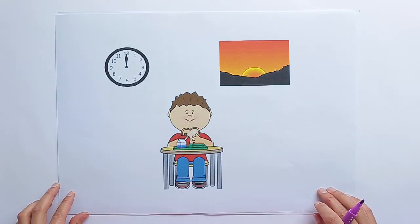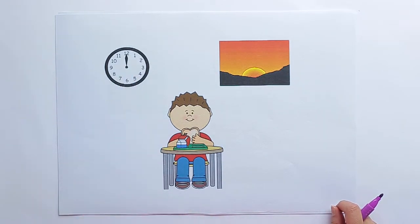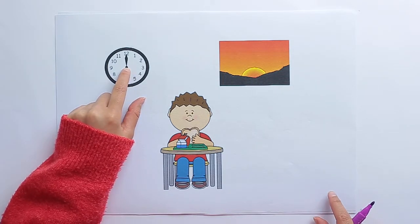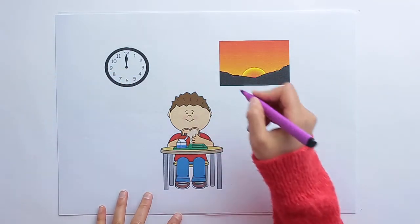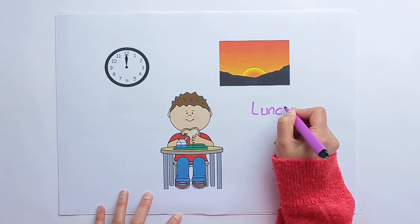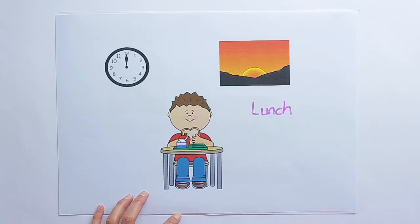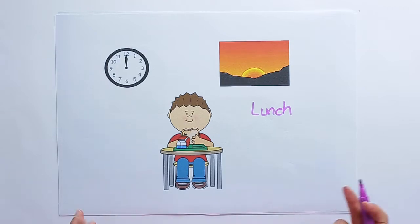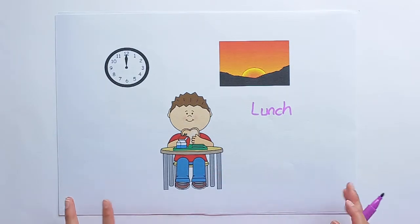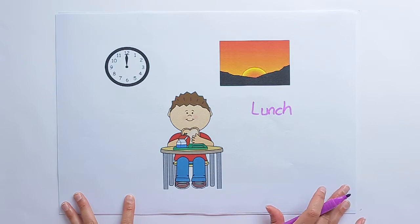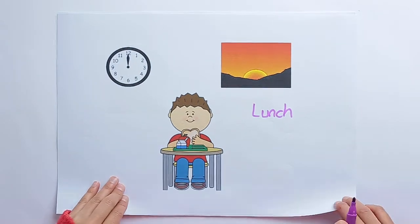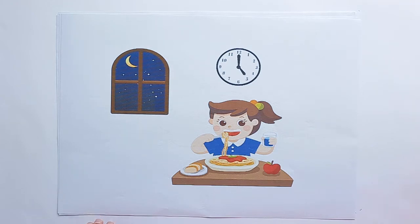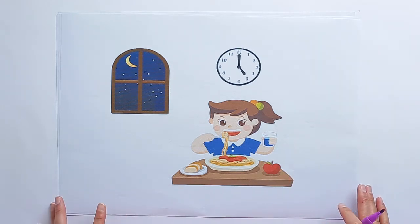Next one — lunch. Look at the time, it is twelve o'clock. We have lunch at one or two o'clock. We generally have lunch at school. We can eat a toast, sandwich, or a hamburger. We can eat apple. That's lunch.